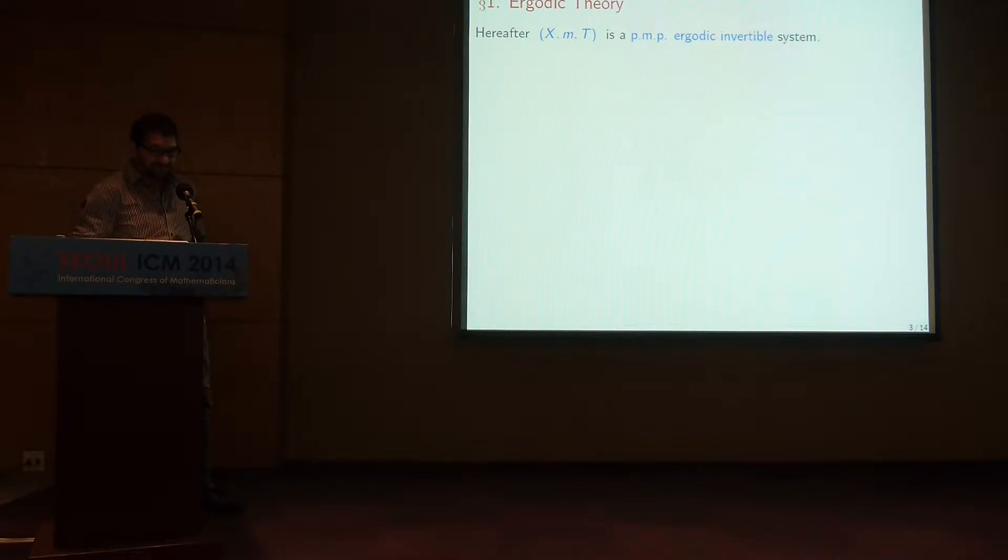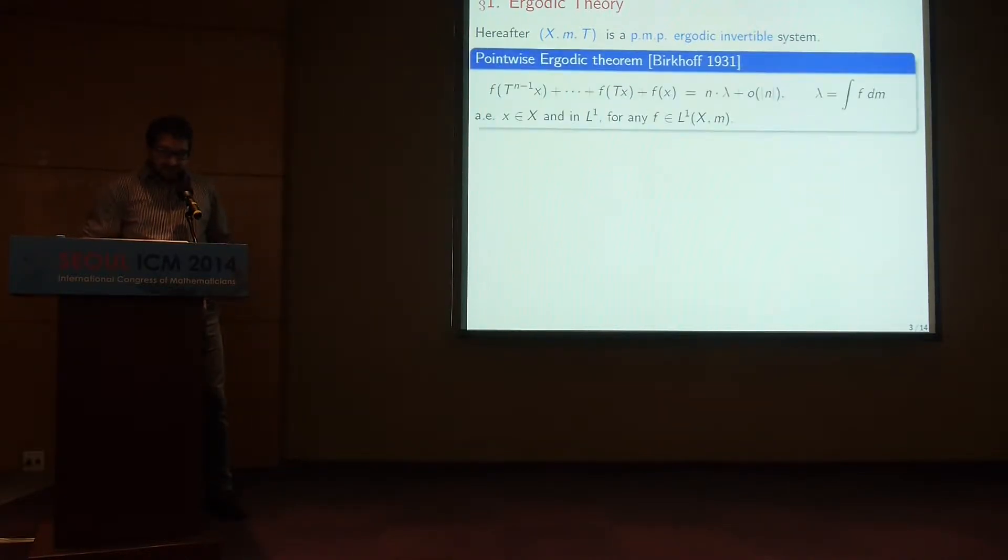Let's talk about Lyapunov exponents first, because this is the most technical part. XMT will denote here always a probability measure preserving system. XM is a standard probability space, T is a transformation of that space. It is assumed to preserve the measure, and I'll take it to be invertible. We'll assume ergodicity, which means some irreducibility condition that can always be achieved.